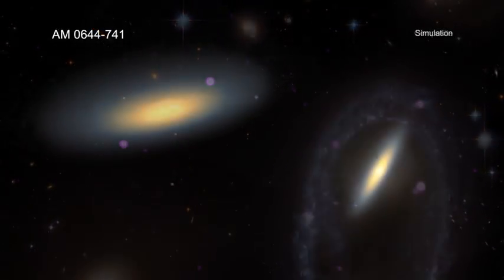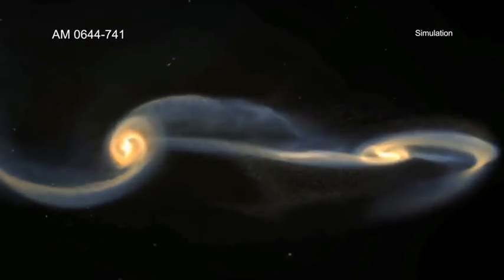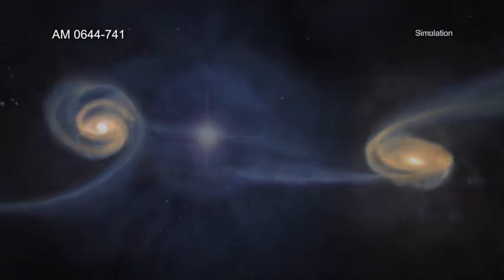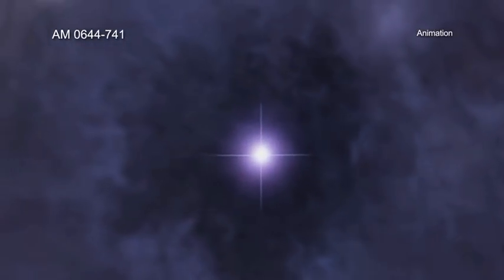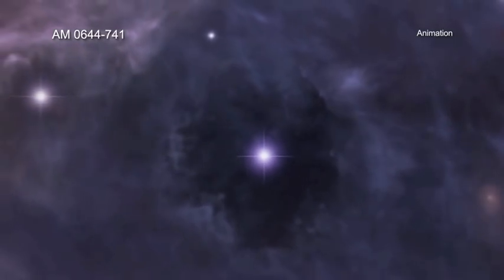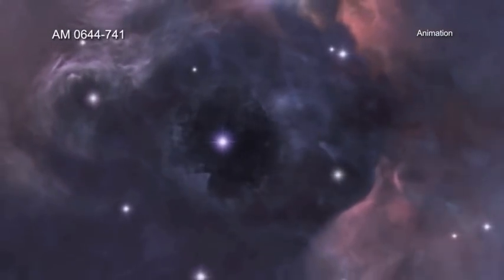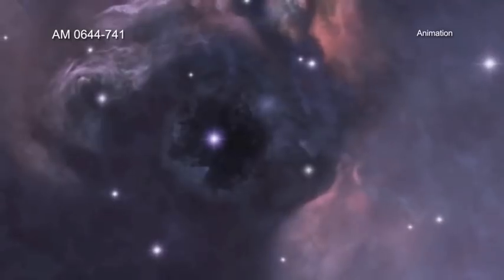Astronomers think ring galaxies are formed when one galaxy smashes into another in a catastrophic collision. The impact generates ripples in the interstellar gas of the targeted galaxy. These ripples, in turn, trigger new waves of star formation as gas expands outward from the site of the collision.